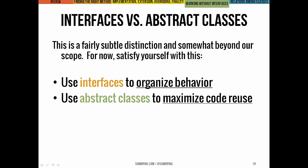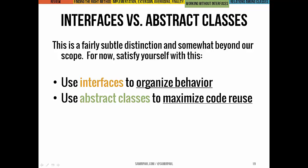Now let's highlight the three different ways that classes can relate to each other. First, an object in one class can call a method or use an object of another class. For example, a Circle object calls a method of the StandardPen object to draw itself. The sender — the Circle — is the client object, it depends on the receiver's class. We call this relationship dependency.